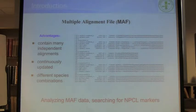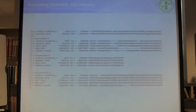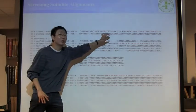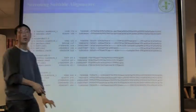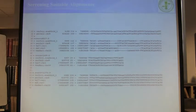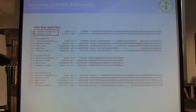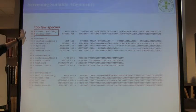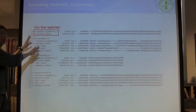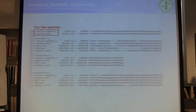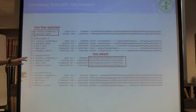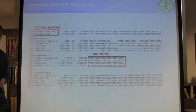So you can just analyze the MAF data and search for NPCR markers. This is a piece of the MAF file. This is sub-alignment one, two, three, four. What are our criteria for which sub-alignments to use? I have a very simple thinking. If a sub-alignment has too few species — just two — I discard it. Too few species is one criterion. And if it's too short, you have no place to design primers — discard.